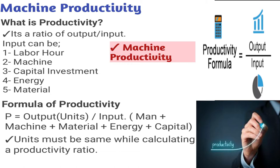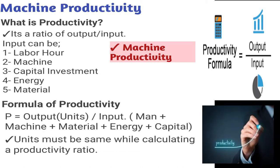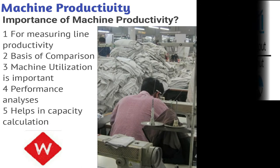So we have a formula: productivity equals output divided by input. Output is what you have produced, and input covers all the resources you have used — man, machine, material, and any other resources counted.